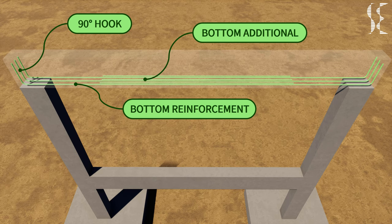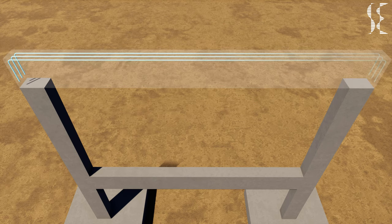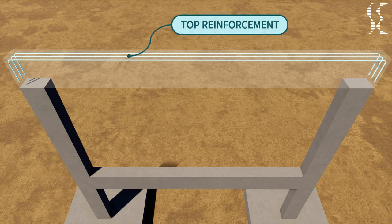Then comes top reinforcement which runs from column to column and have a 90-degree hook with sufficient anchorage at the ends.